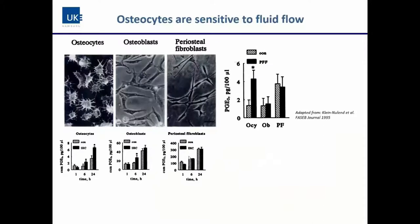Osteocytes are clearly sensitive to fluid flow. Early work by Klein-Nulend and co-workers demonstrated this by looking at second messengers released by osteocytes. Prostaglandin, which has anabolic effects on bone, is released in greater amounts from osteocytes subjected to fluid shear stress compared to osteoblasts and fibroblasts. This induction of prostaglandin release occurs in a time-dependent manner, shown by the comparison of six versus 24 hours in osteocytes.